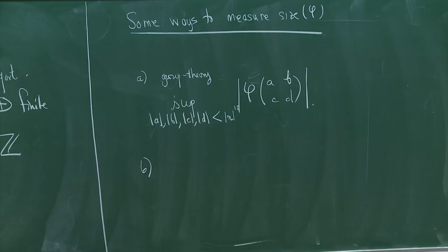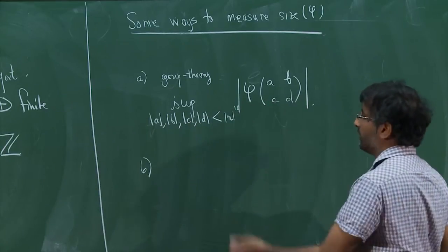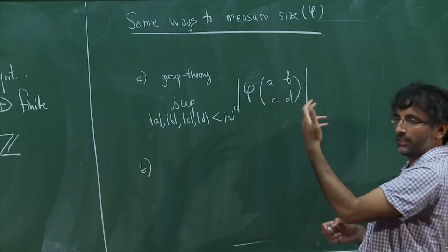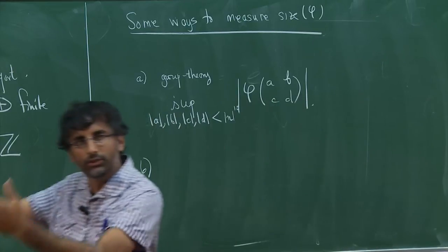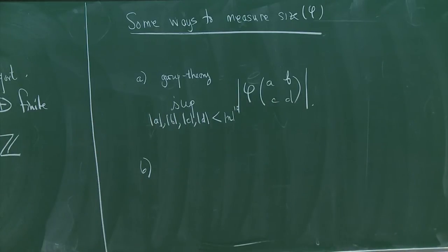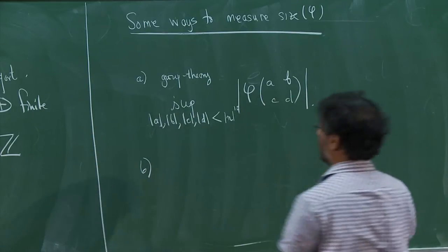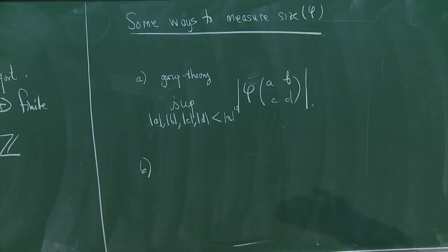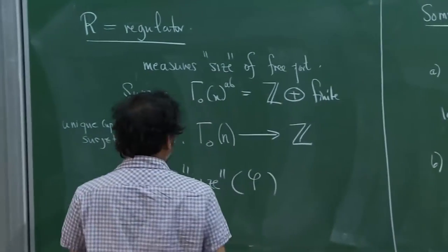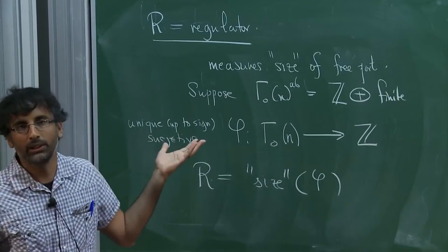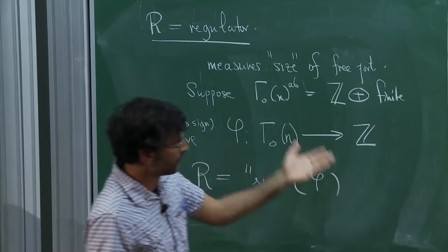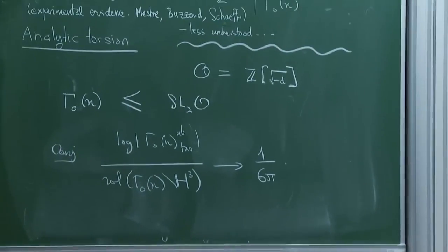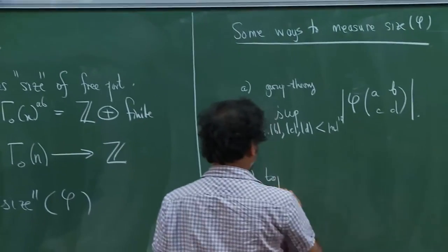Because you're multiplying matrices, if you go up to n^20 you don't really expect it to get that much bigger — when you multiply matrices the entries multiply, so you expect this to grow only logarithmically. The exact bound you put here is not so important. For our applications, all we care about is whether R grows exponentially with n or not — that's a coarse-scale, topological way of thinking about it.